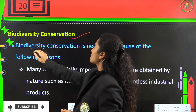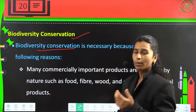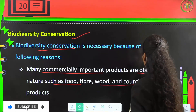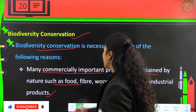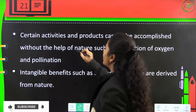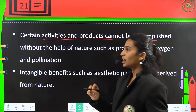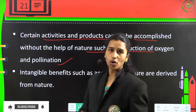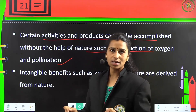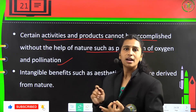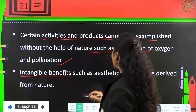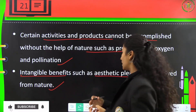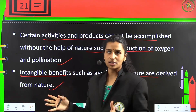Biodiversity conservation is very much necessary because many commercially important products are obtained from natural sources like food, fiber, wood, and countless industrial products. Certain activities cannot be accomplished without the help of nature, such as the production of oxygen and pollination. There are also intangible benefits like aesthetic pleasure derived from nature.